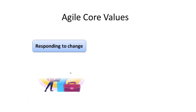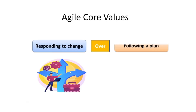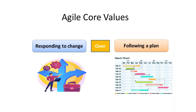Next is responding to change over following a plan. Agile recognizes that change is inevitable and is beneficial in software development. In the changing environment, working with a fixed plan might lead to gaps in the delivered solution. Agile values flexibility and the ability to respond to change in terms of requirements, market conditions, or user needs over strictly adhering to an initial plan.